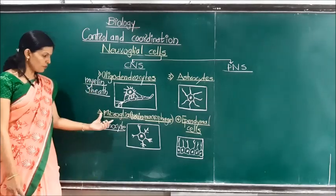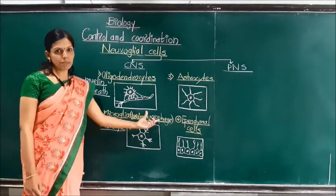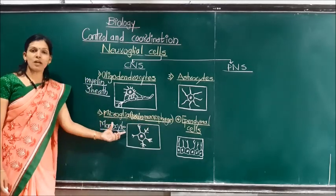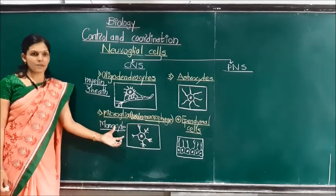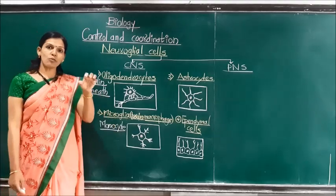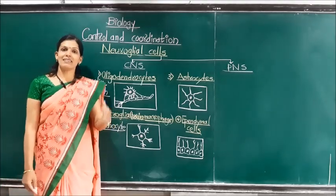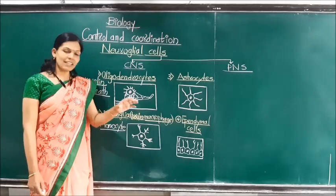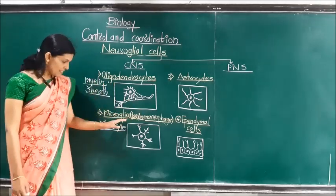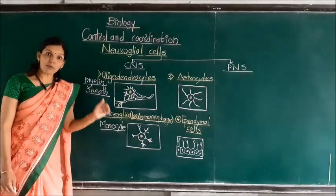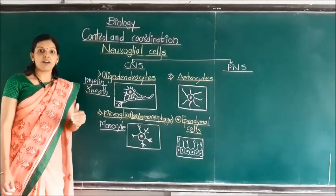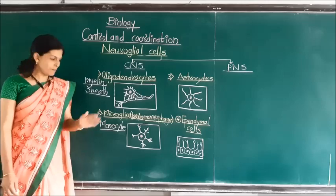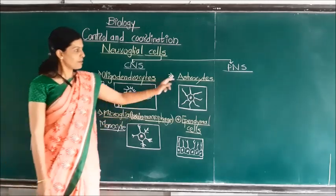Now we will focus on microglia, or brain macrophages. These microglia are derived from monocytes. They go to the site of injury and digest cellular debris as well as pathogens present at that site. In this way, microglia protect our brain and nervous system from infection by pathogens.